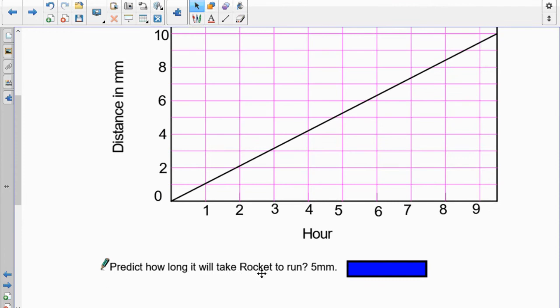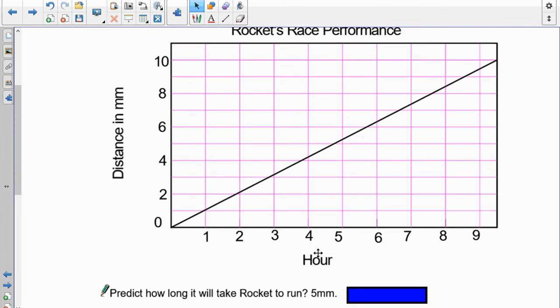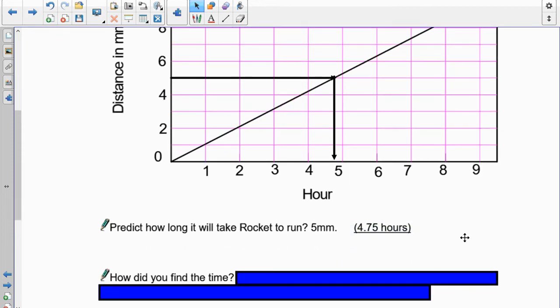So, predict how long it will take Rocket to run five millimeters. So, grabbing our graph, there's five millimeters right there. So, we just have to go over here and come straight down. And we're looking at, well, there's 4.5, 4.75. So, I'm thinking maybe around 4.8, 4.75 hours? How did I find the time? Well, I just showed you. I took up and went to the five millimeters up here. I went over to where the graph meets the line. And it came down and I found the time down below.